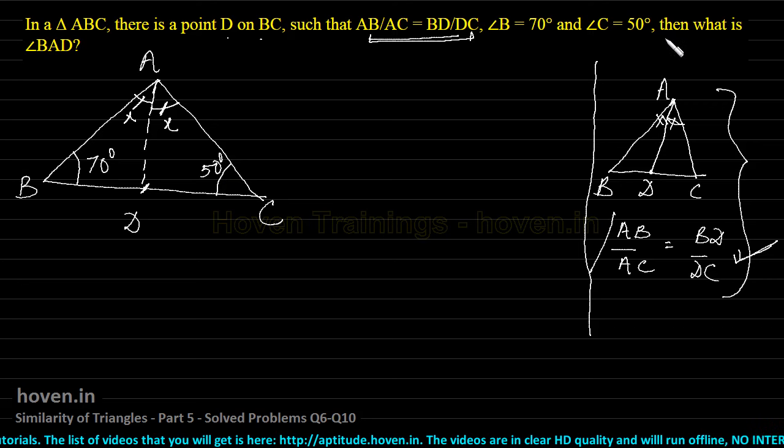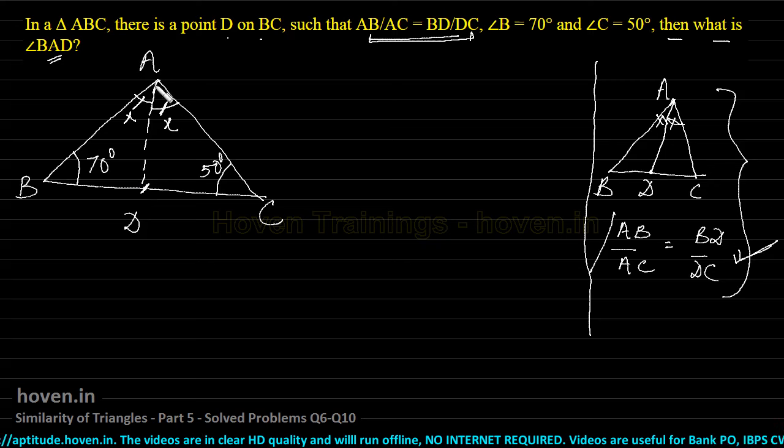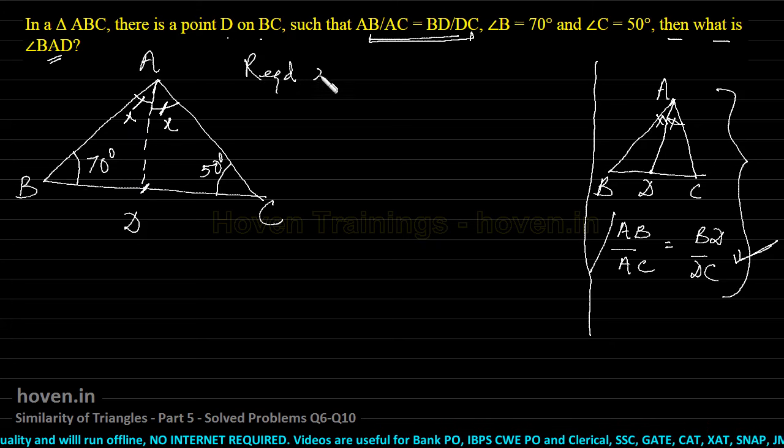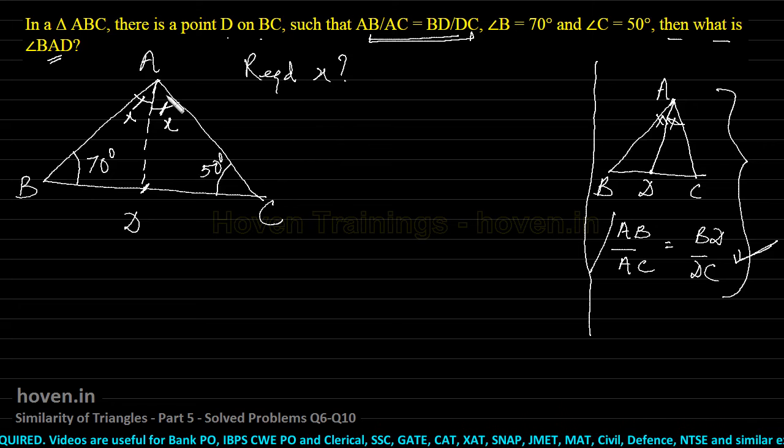Next he says, then what is angle BAD. Angle BAD means this angle, that is we have to find the value of x. I don't think it is a very tough problem now, because the sum of angles of a triangle has to be 180 degrees.